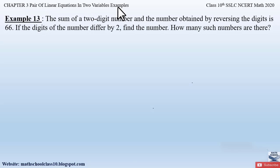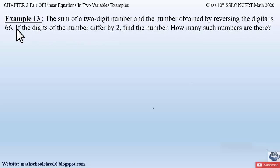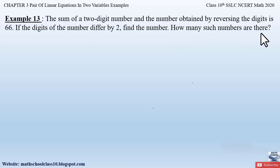Example 13 from Chapter 3, Pair of Linear Equations in Two Variables, says: the sum of a two-digit number and the number obtained by reversing the digits is 66. If the digits of the number differ by 2, find the number. How many such numbers are there?